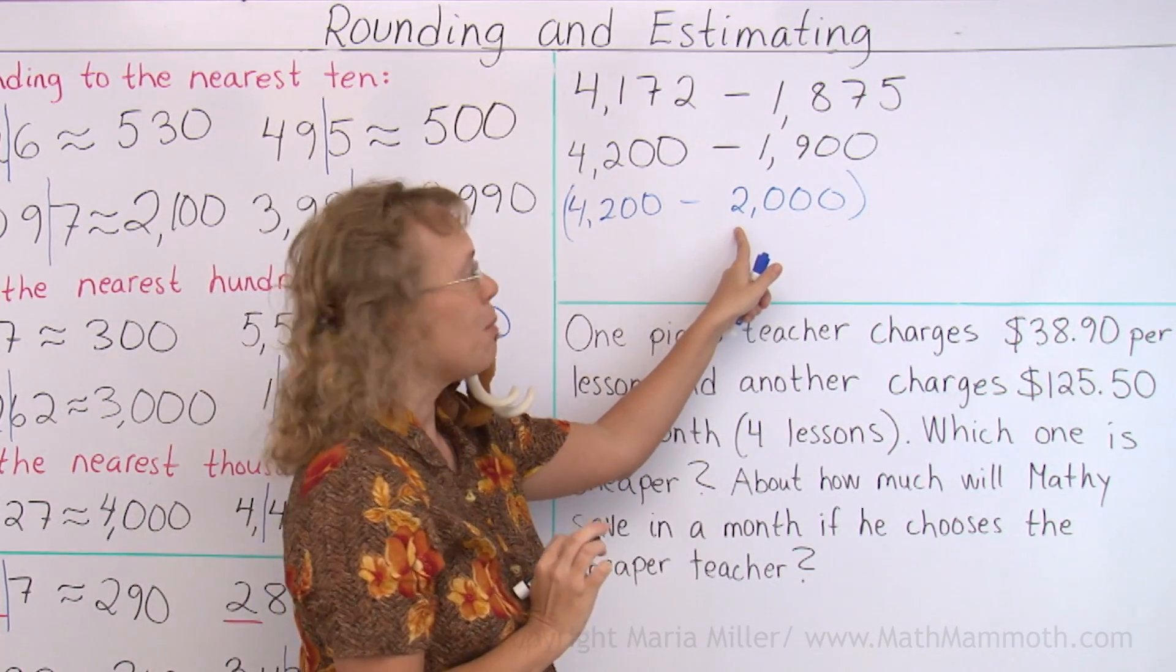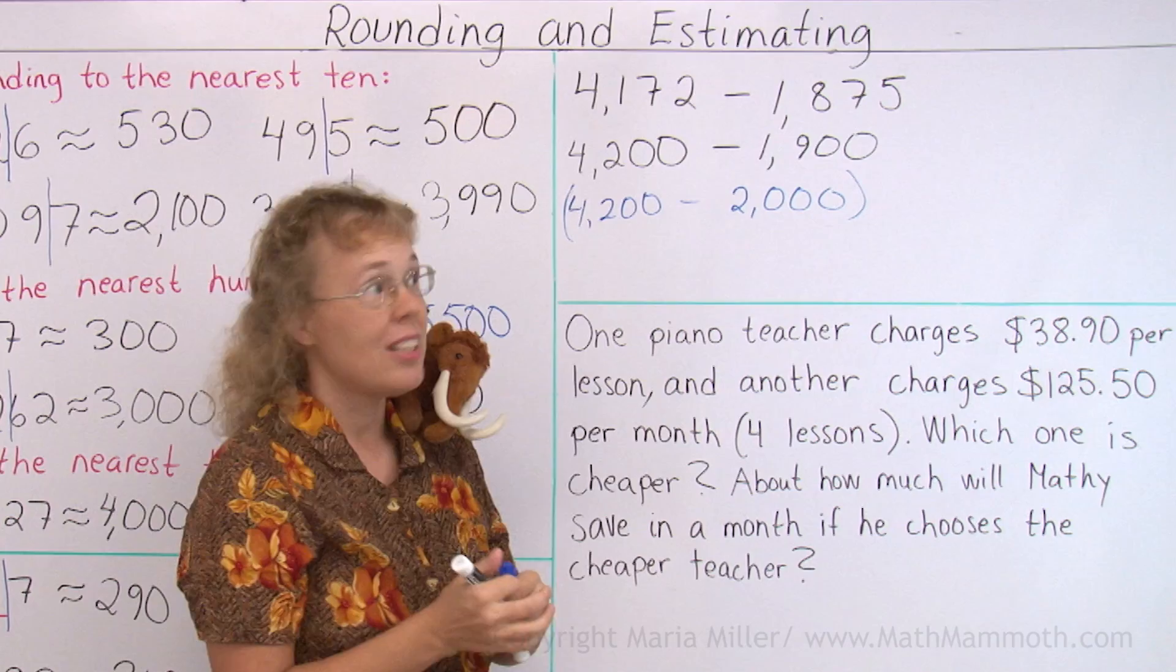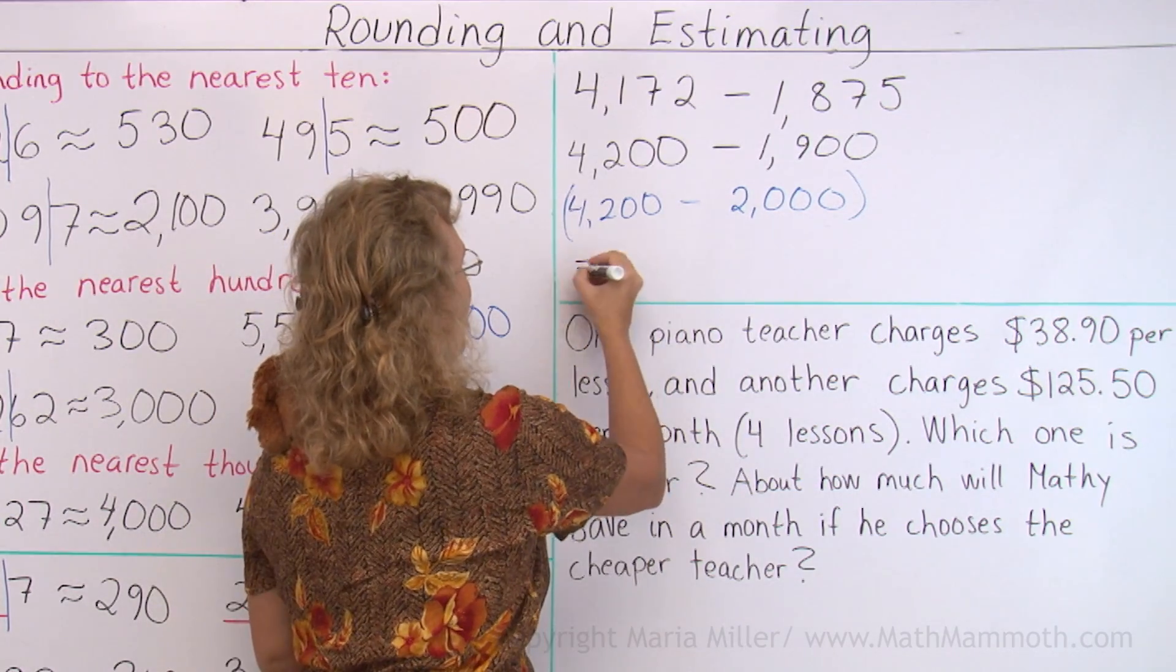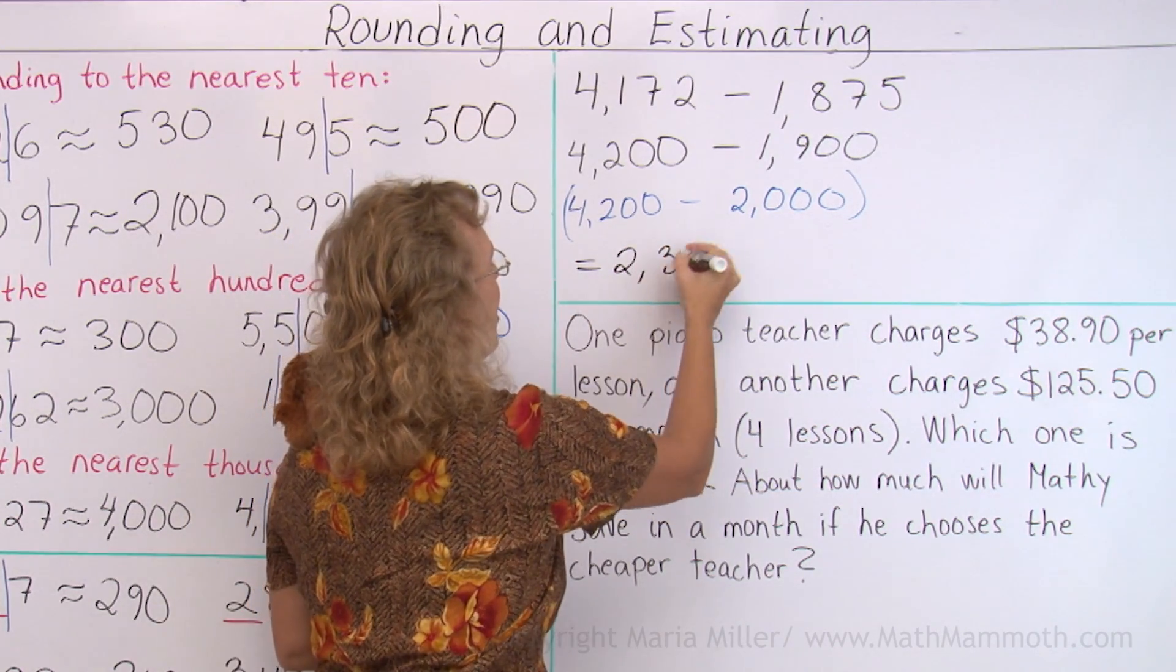But I subtracted one hundred too much, right? So I'm gonna add that to my final answer to correct my error, so I get two thousand three hundred.